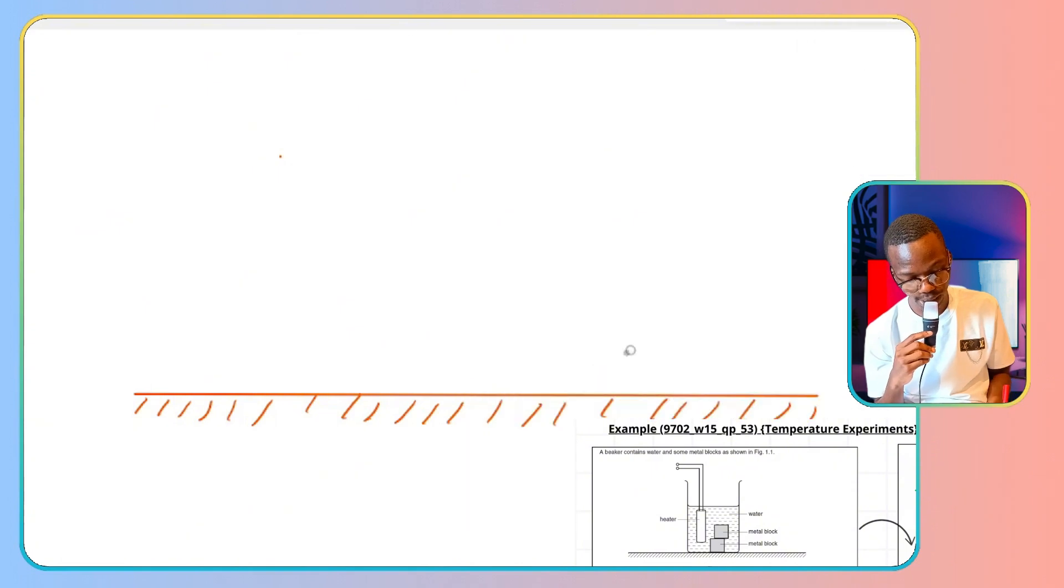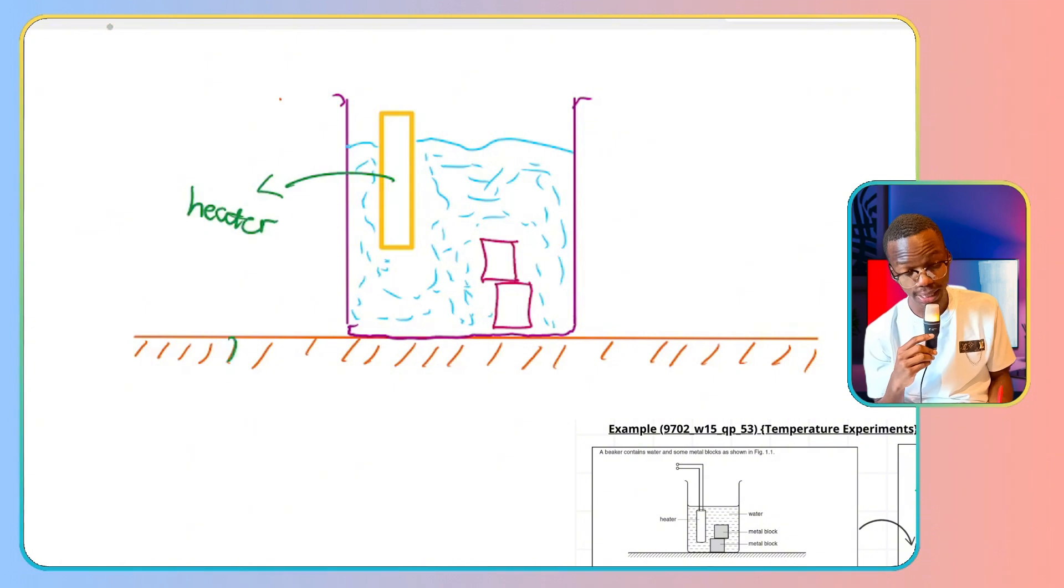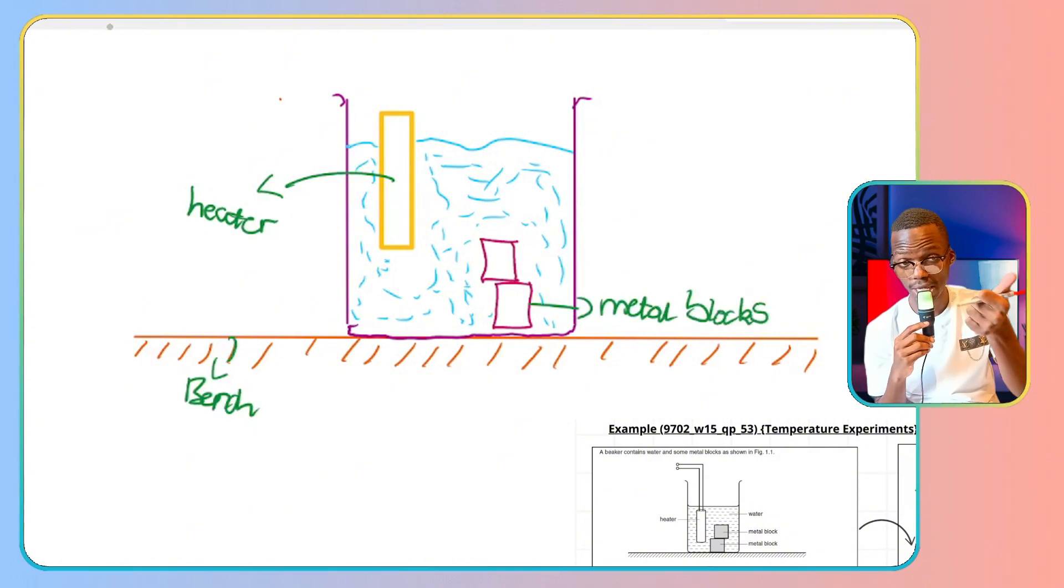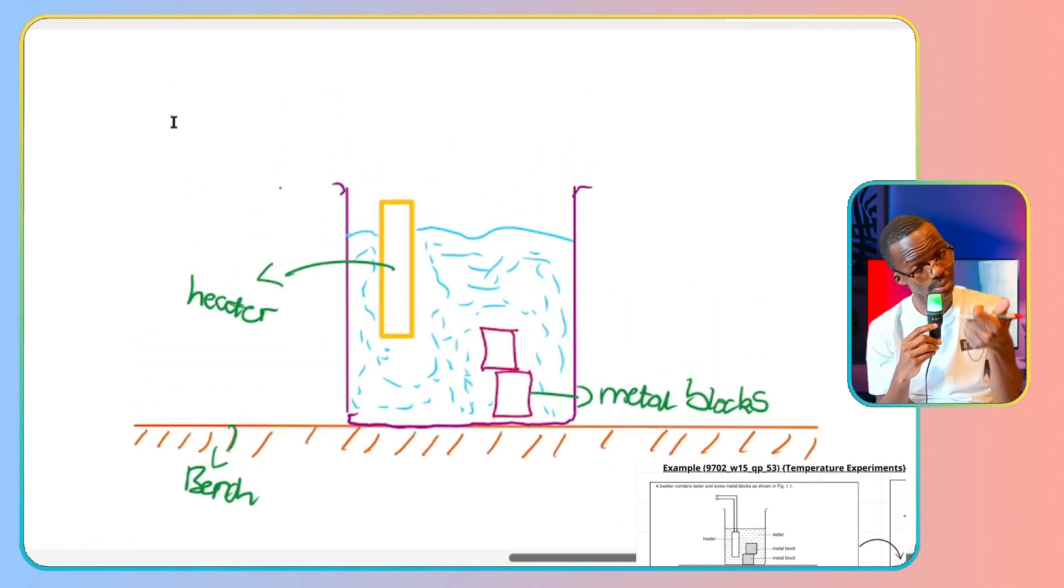So in this question, I start again with my little bench like that. Then I draw my bowl like that. Then I put my little blocks inside. Then I put my heater like so. The moment I put my heater, I'm thinking to myself, to get electrical energy is VIT. I'm going to need V. I'm going to need I. So I need to draw some setup that has a power source, number one. Number two, a way of measuring the ammeter reading so that I can get the current. And number three, the way of measuring the voltmeter reading so that I can get the voltage.